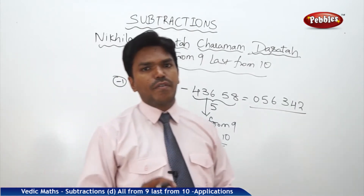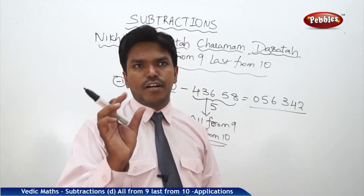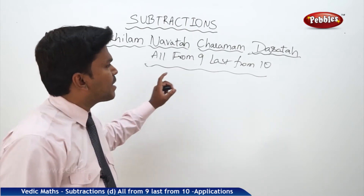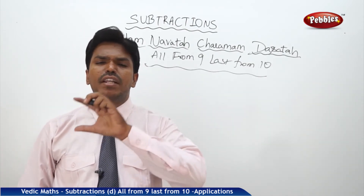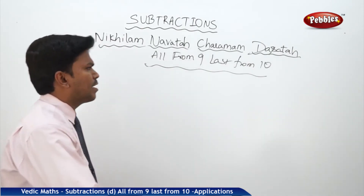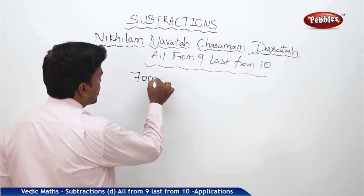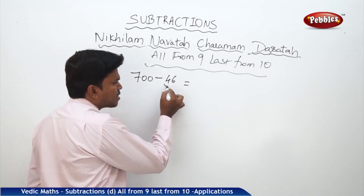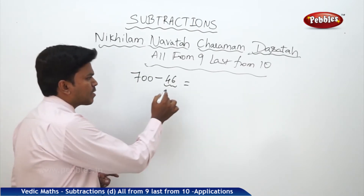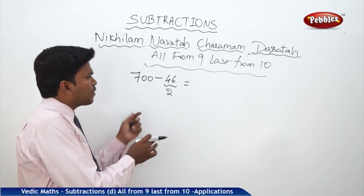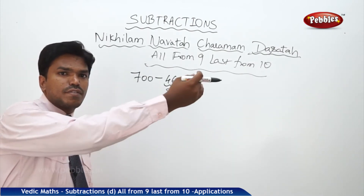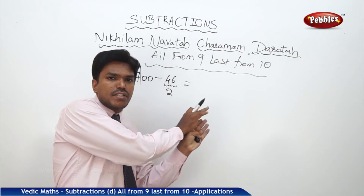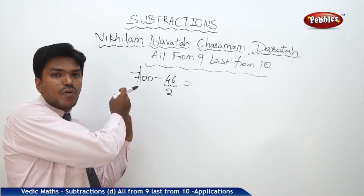Just like that — subtract 1 from the given number and apply 'all from 9, last from 10' to the subtrahend, and you will get the answer. We will now go step by step, taking smaller examples to bigger examples. This method can be applied whenever the minuend has many zeros. For example, suppose it is 700 minus 46. First, how many digits are there in the subtrahend? Two digits. That means you have to make a partition of the minuend after two digits from the right.